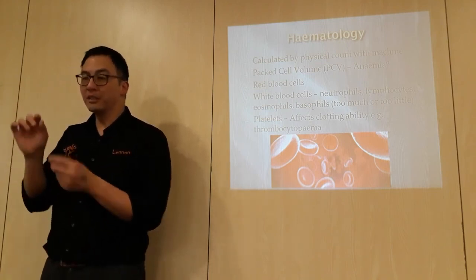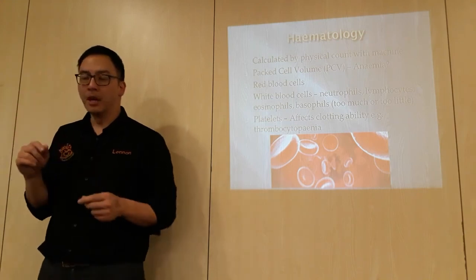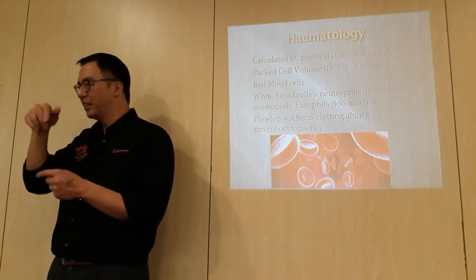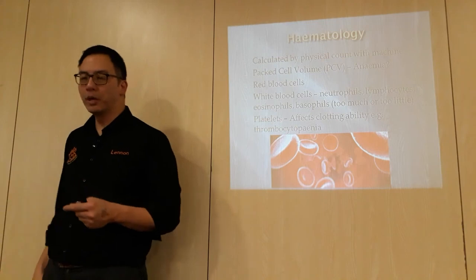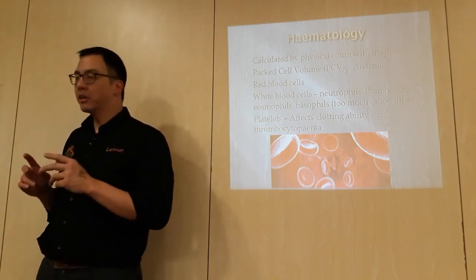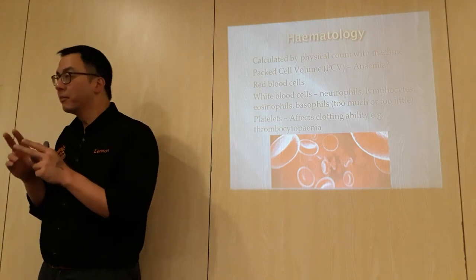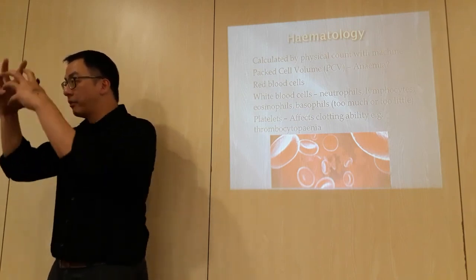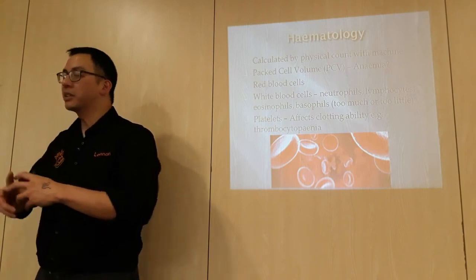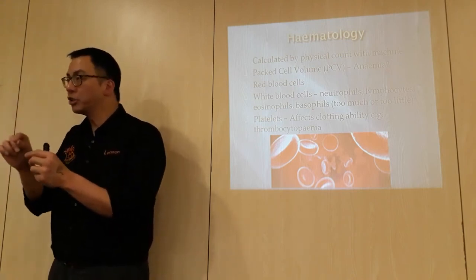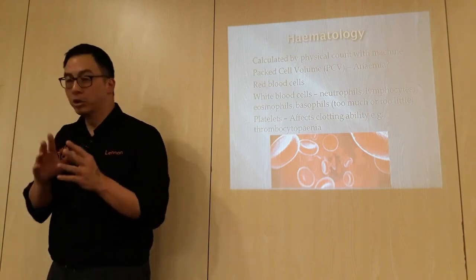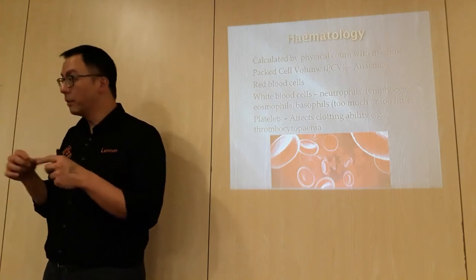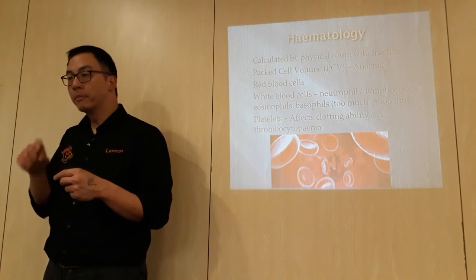The machine uses light to count cells. This is also why in cats especially, the platelets tend to clump together, so the machine counts a clump as one even though there may be 50 platelets in it. That's why platelet counts in cats can appear artificially low on the machine. Hematologists always check the blood film as well.